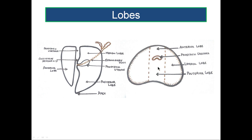In a transverse section you will find the prostatic urethra, which is crescent-shaped with the verumontanum projecting forwards. In front is the anterior lobe, on either side are the lateral lobes, and posterior to it — in the upper part — is the median lobe and in the lower part is the posterior lobe. The anterior lobe is found only in childhood; after about 6 years of age it gets converted into a fibromuscular stroma covering the anterior surface of the gland.